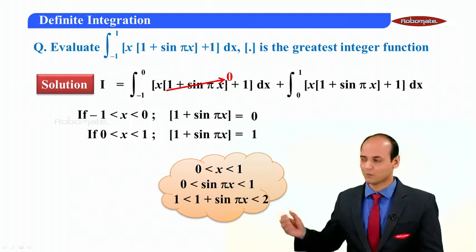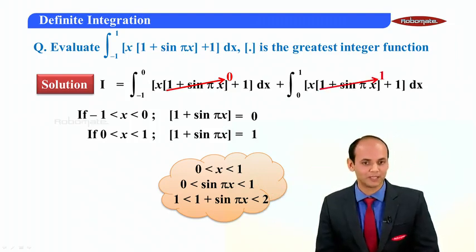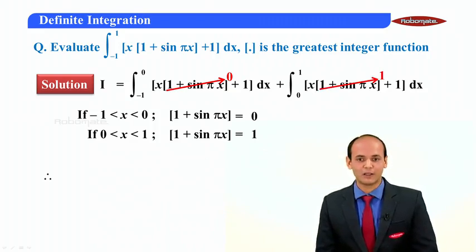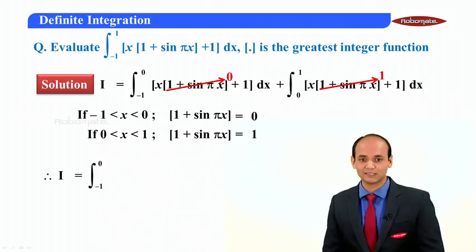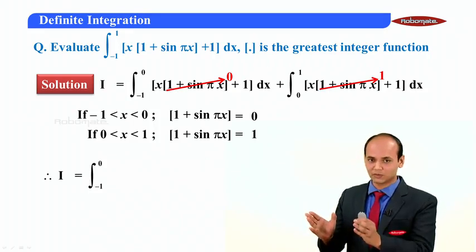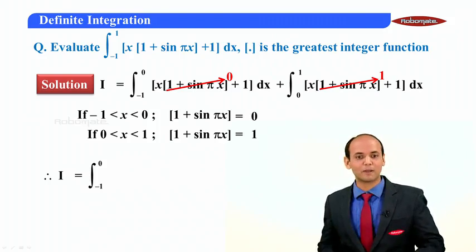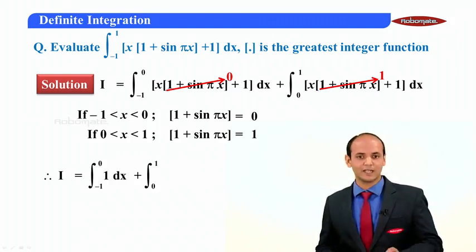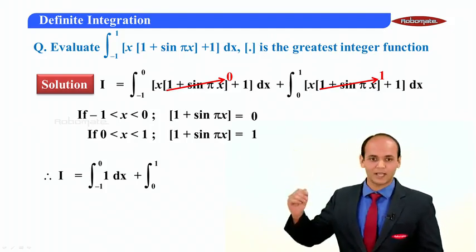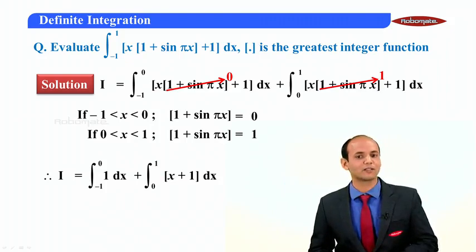Substituting the value 1 into the second integral, and simplifying, we get: I = integral from minus 1 to 0 of 1·dx plus integral from 0 to 1 of ⌊x + 1⌋ dx, since the inner floor of the first part became 0, reducing it to ⌊1⌋ = 1, and x remains in the second part.